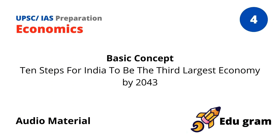10 Steps for India to be the 3rd Largest Economy by 2043. Step 1: Fiscal Consolidation. A target of fiscal deficit of 3% of GDP must be achieved by 2016-17, and must always be kept below that level.